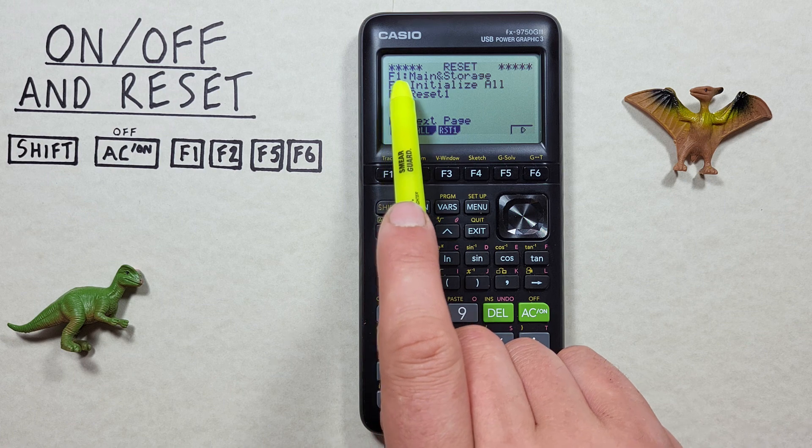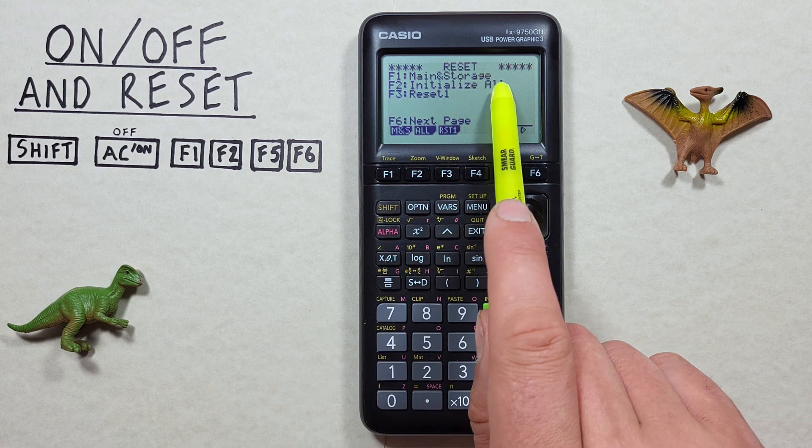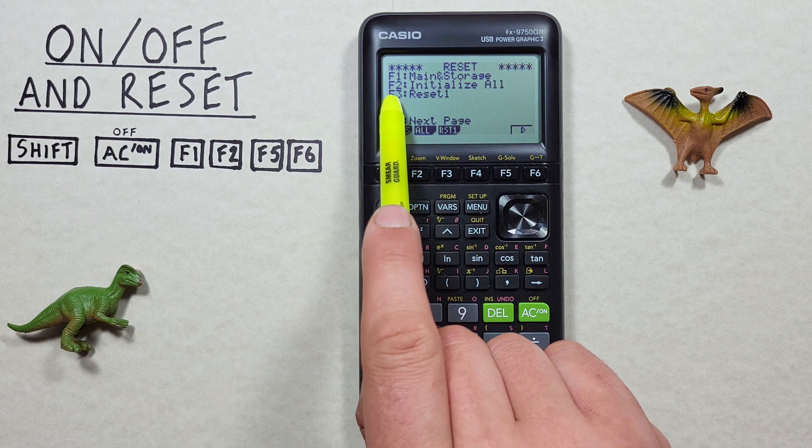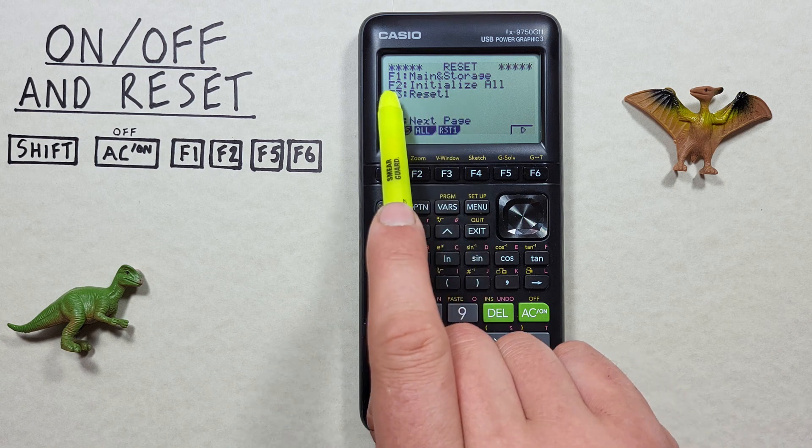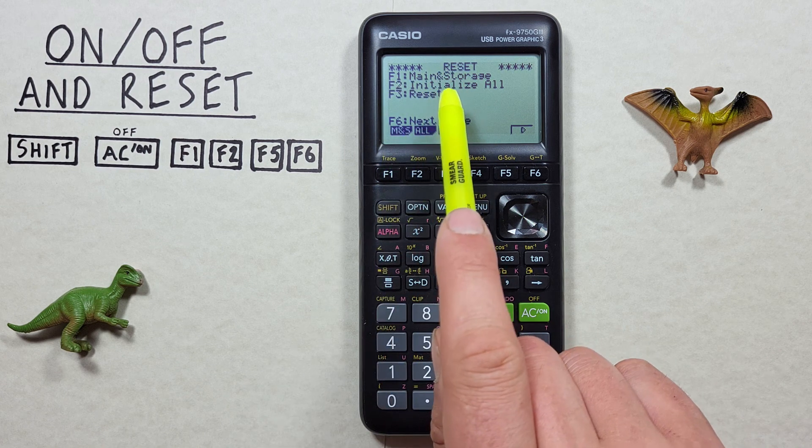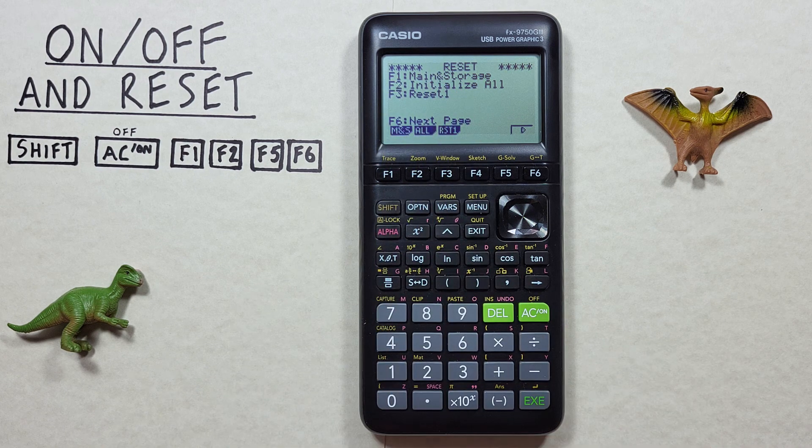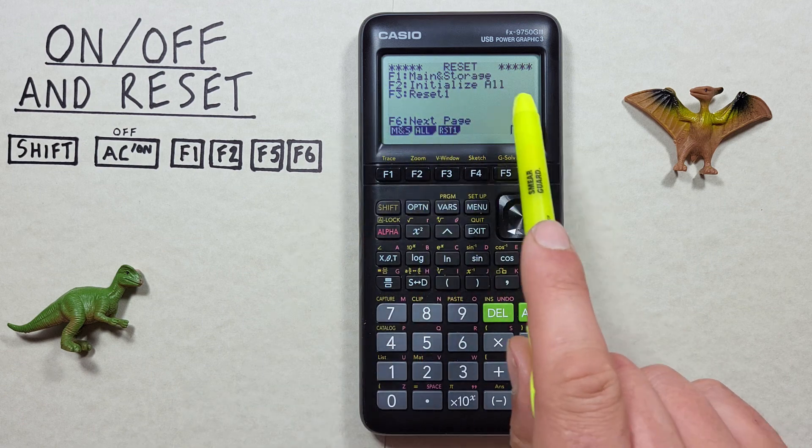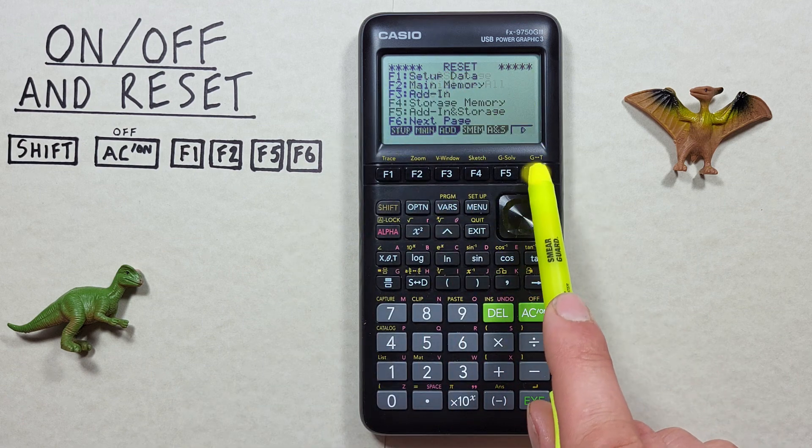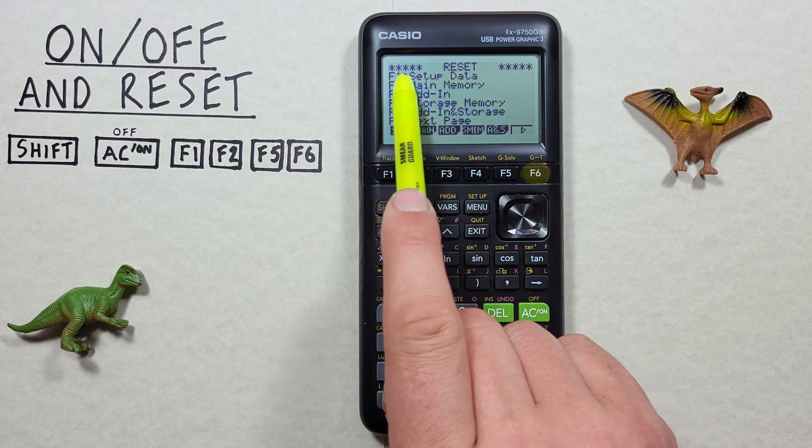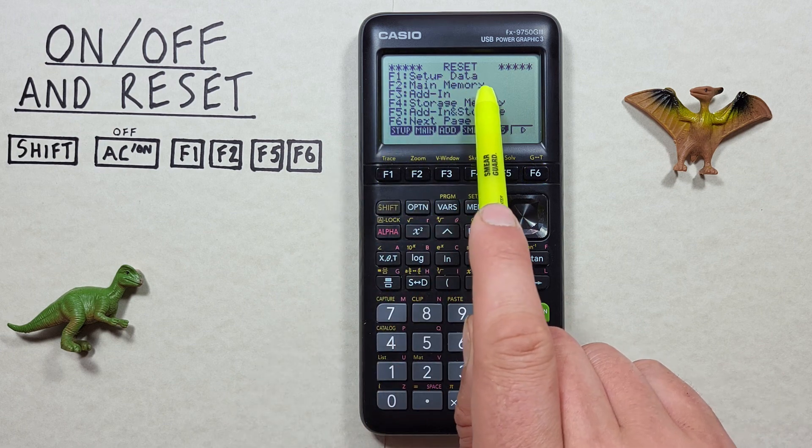And if we go to F6, our F1 option here is our main and storage memory, our F2 option is our initialize all, and F3 is reset one which is all of the above except some applications. I wouldn't recommend using any of these unless you know exactly what you're doing. I would stick to F1 and F2, setup data and main memory data.